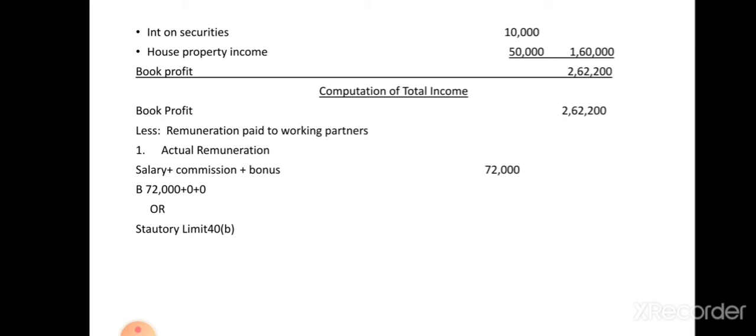After deducting one lakh sixty thousand, the balance is two lakh sixty-two thousand two hundred. This is the book profit. After finding the book profit, the next step is the computation of total income. The base for total income is the book profit: two lakh sixty-two thousand two hundred.